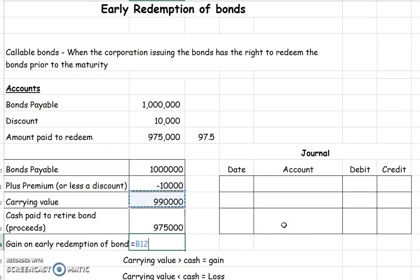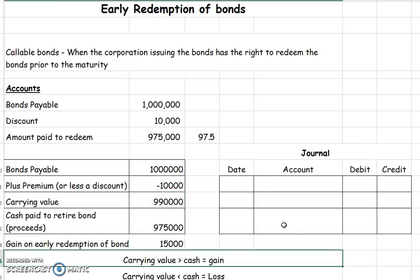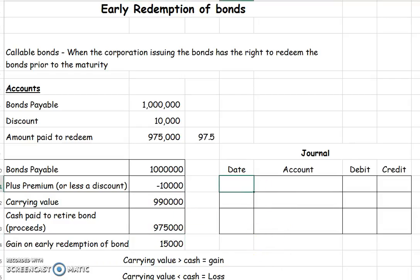If we had a loss, it would just say loss on early redemption of a bond. Here's a little hint to help you remember: if the carrying value is greater, you have a gain; if the carrying value is less, you have a loss.